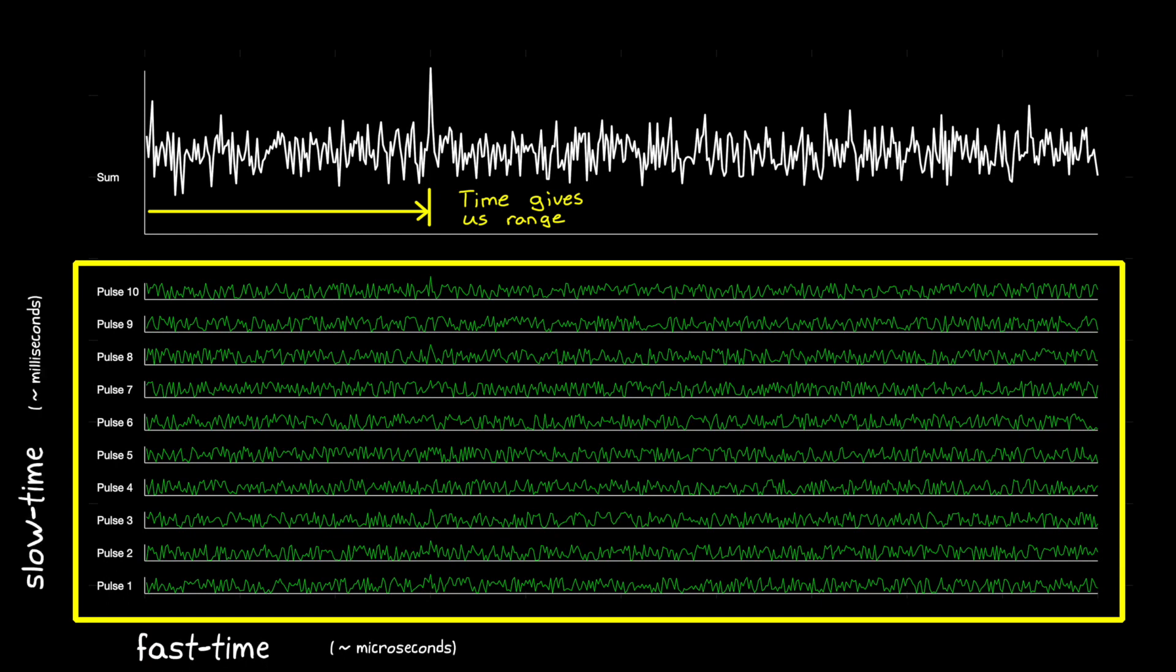And the vertical axis is called slow time since it covers the longer time between pulses, or about 9 milliseconds in this particular case. When we measure range, we do so across the fast time axis. But we're integrating the pulses across the slow time axis.